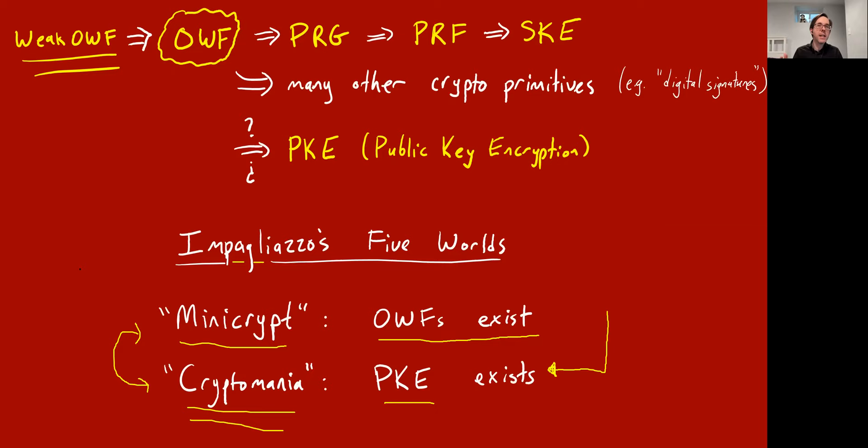Whether you take NP equals P or NP equals BPP — I'll just call them the same thing — that world was called Algorithmica.